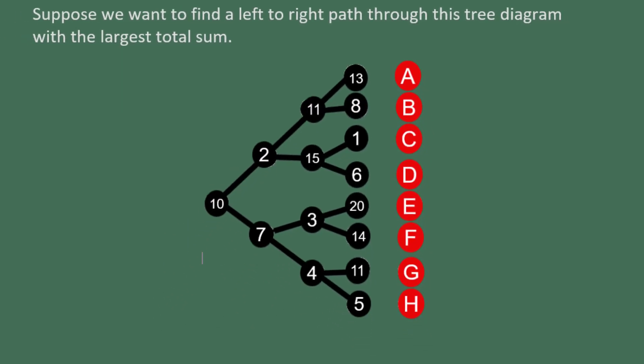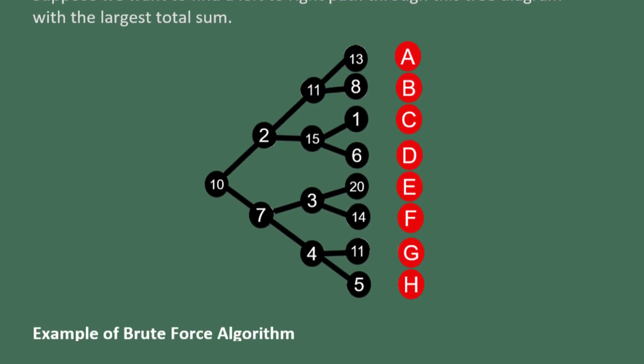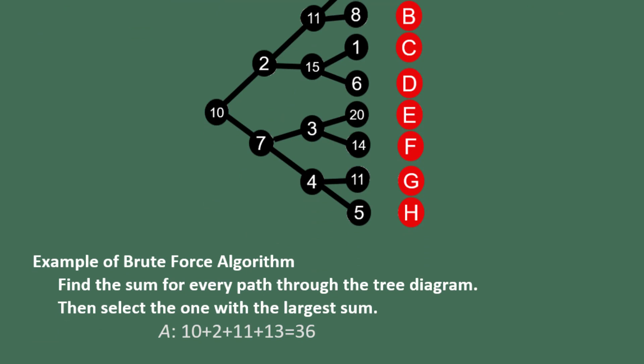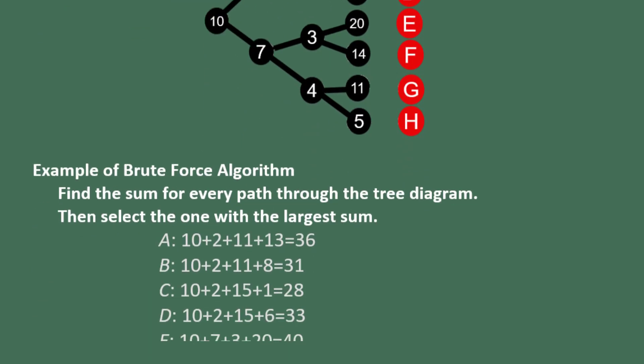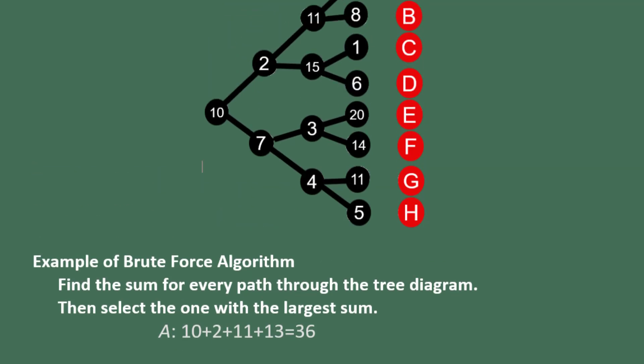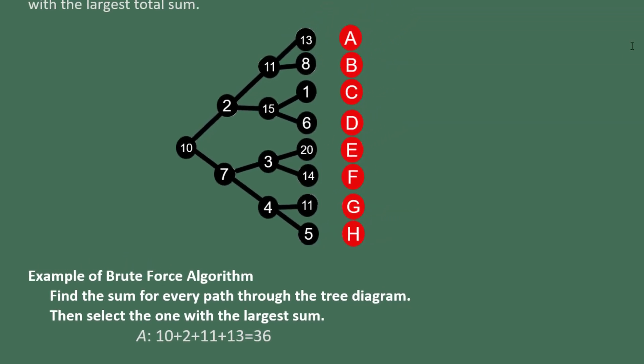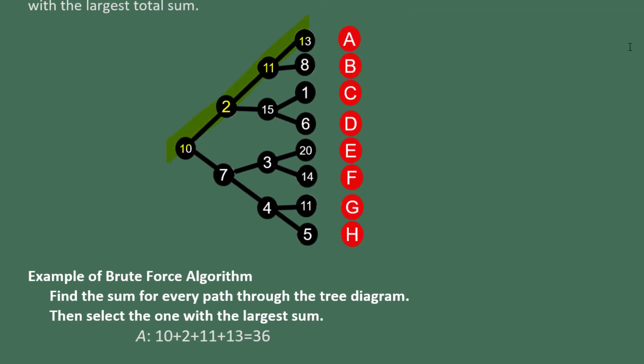So that's what we mean by a branch of the tree diagram. The brute force algorithm that we're going to use to solve this problem of finding the branch with the highest sum is to find the sum associated with every single branch. So for branch A, we said we're going through 10, 2, 11, and 13 for a total of 36.